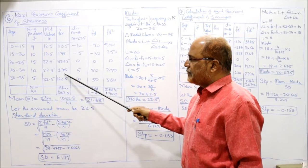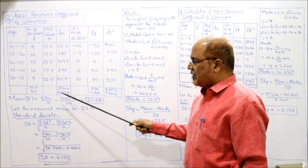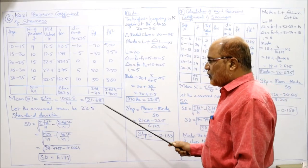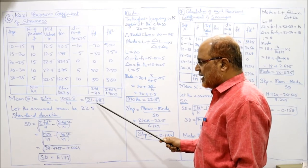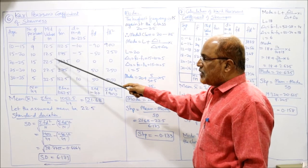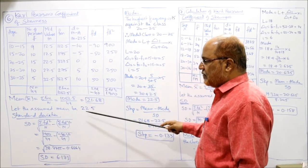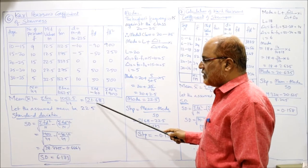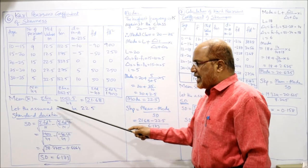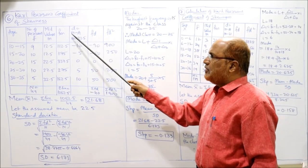The total of fm is 1062.5. Dividing 1062.5 by n=49, we get mean = 21.68. Since 21.68 is a fraction and mid values are also in fractions, we select the nearest mid value to use as the assumed mean — the nearest mid value to 21.68 is 22.5, so assumed mean A = 22.5.